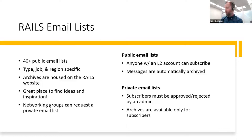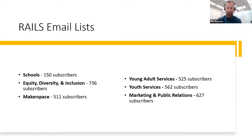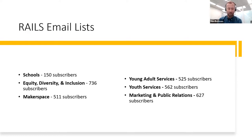A few of the public email lists you might want to subscribe to are on the Rails website. The schools email list is actually separate from the IELTS list. We've been approached about creating a separate high school librarians list, and I think we'll be creating that later in the year. We also have an equity, diversity, and inclusion list with over 700 subscribers — a great place to find recommendations on EDI programming or doing a collection audit. The young adult list would be great for high school librarians, and youth services would be great for elementary folks.